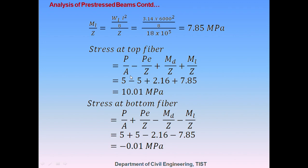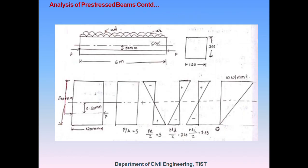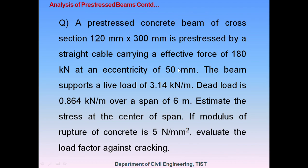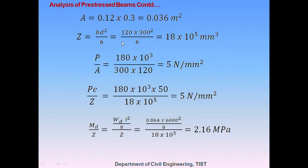The second term is Pe/Z. P is 180 kN and eccentricity e is 50 mm. Since it is a rectangular cross-section, Z is calculated as bD²/6 = 120 × 300² / 6 = 18 × 10⁵ mm³. From these values, Pe/Z equals 5 N per mm square.